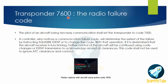Transponder 7600 is the radio failure code. The pilot of an aircraft losing two-way or one-way communication shall set the transponder to code 7600. The controller who notices a communication failure code will determine the extent of failure by instructing 'squawk ident' or a code change. If it is determined that the aircraft receiver is functioning, further control of the aircraft will be continued using code change or ident transmission to acknowledge receipt of clearance. This code shall not be used to ignore ATC clearance or end contact. This image shows how an aircraft squawking 7600 looks on a radar scope.